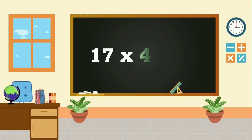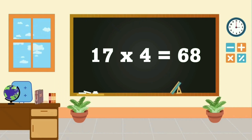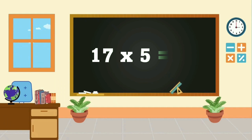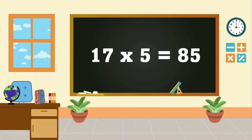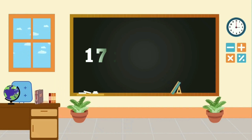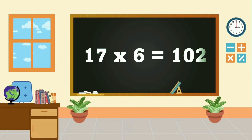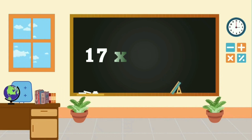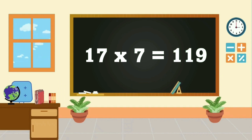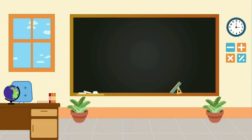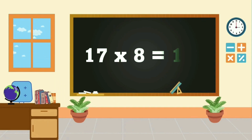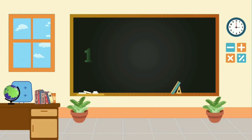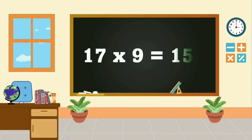17 fours are 68, 17 fives are 85, 17 sixes are 102, 17 sevens are 119, 17 8 136, 17 9 153.